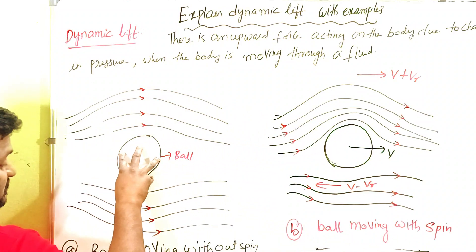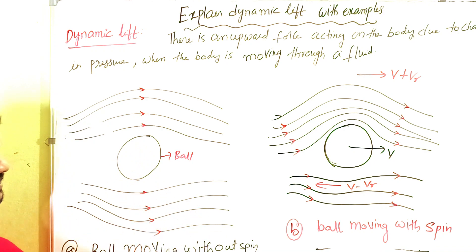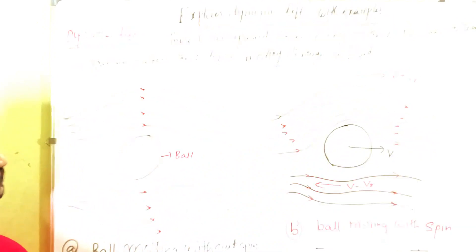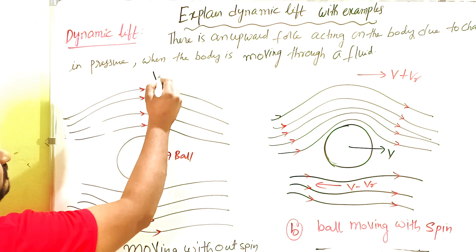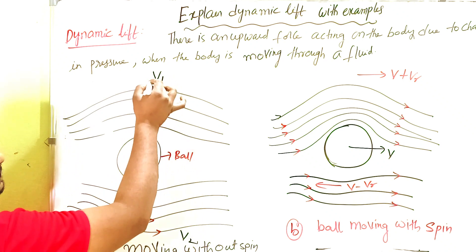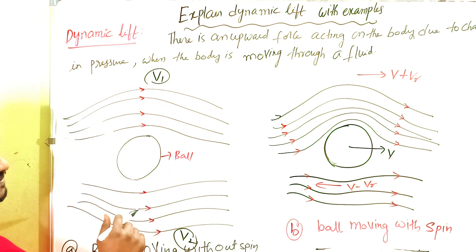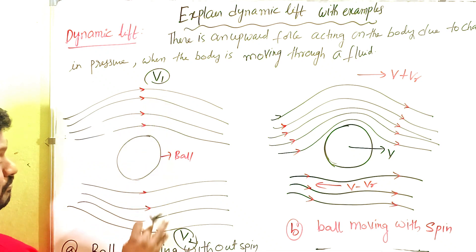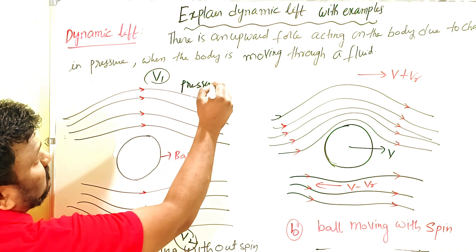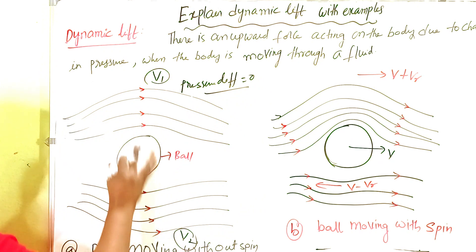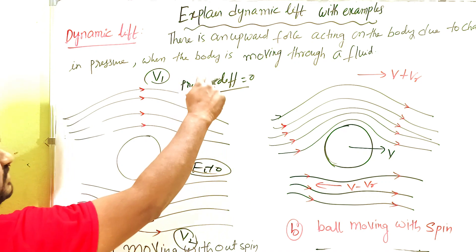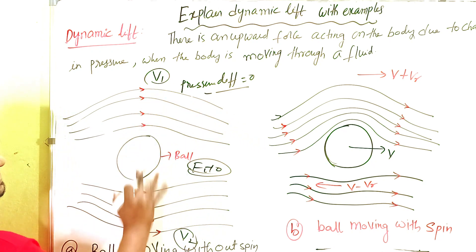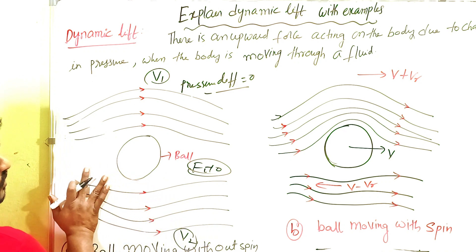First case: ball moving without spin. The ball is simply moving in air without spinning. You can observe that the number of streamlines above the ball and below the ball are the same, and they are almost equally separated. The velocity V1 above the ball and velocity V2 below the ball are both the same. Since velocities are the same, the pressure above and below the ball is also the same. The pressure difference is almost zero, so there is no upward force acting on the ball.